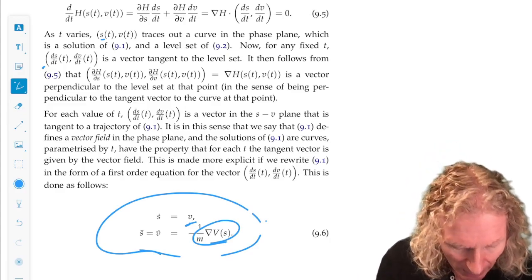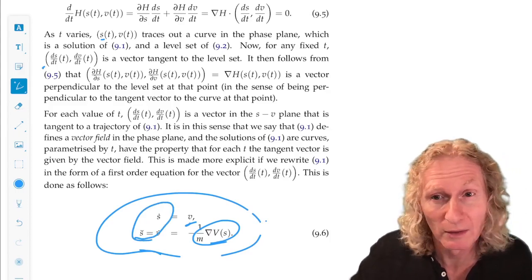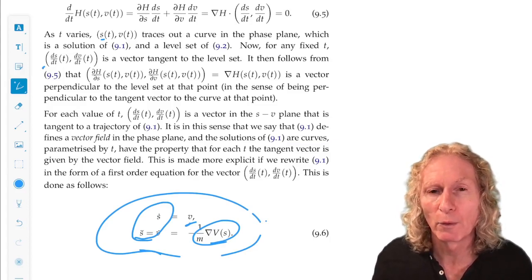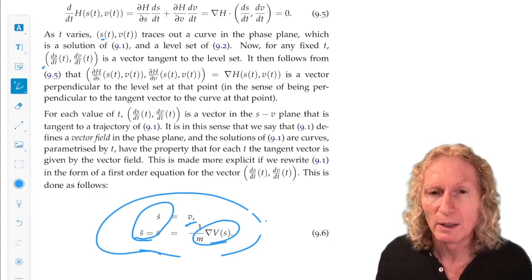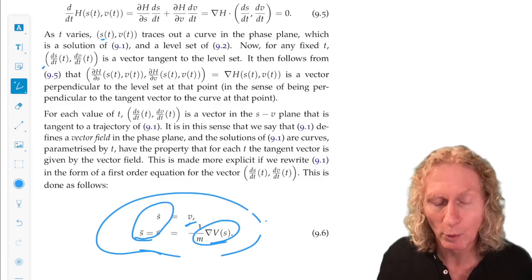Plugging in any number into the left hand side gives us zero, because derivative of a number constant is zero. So we have a situation where we have located constant solutions of Newton's equation. These are equilibrium points. They do not change in time, and that is the point.